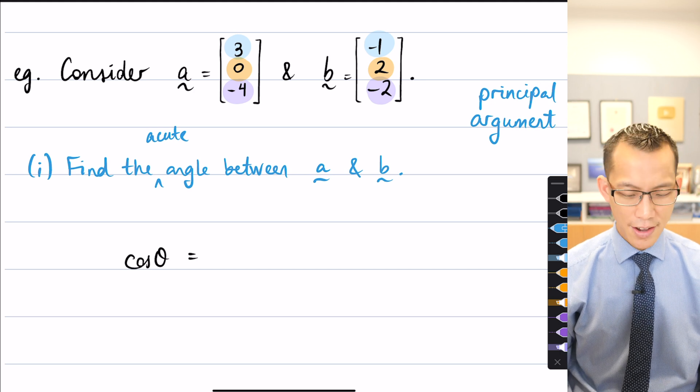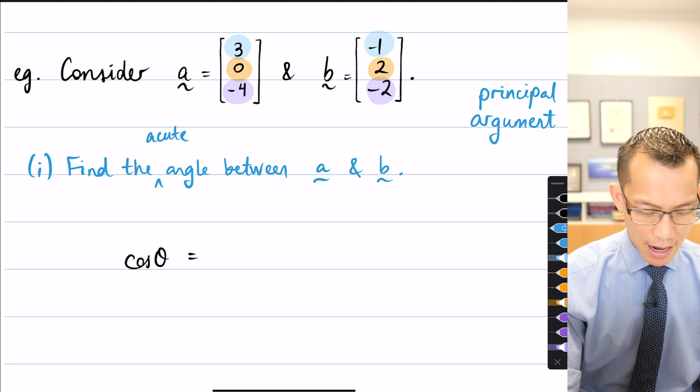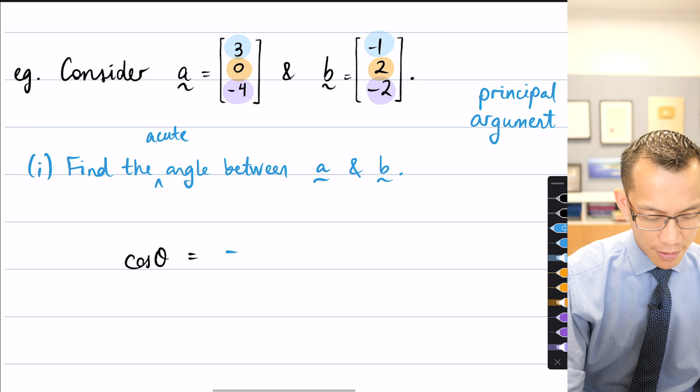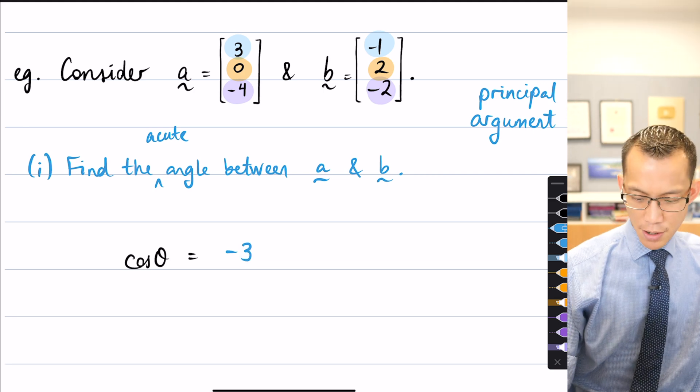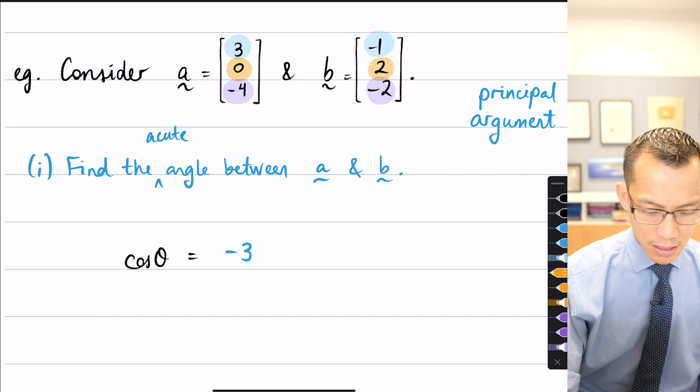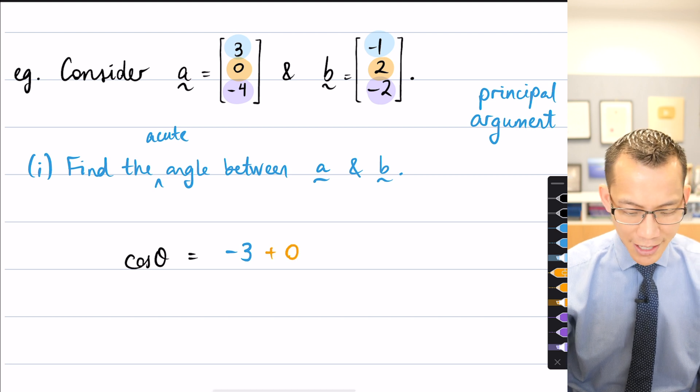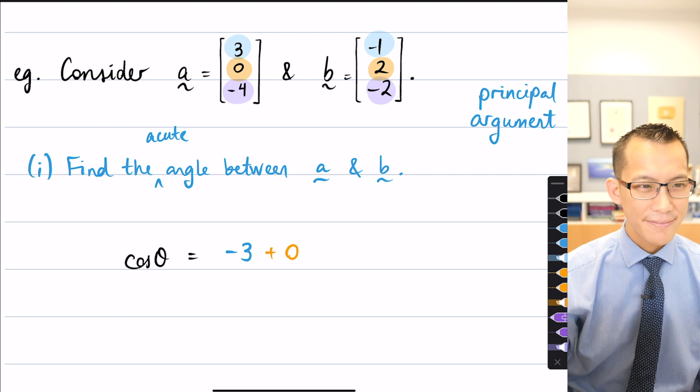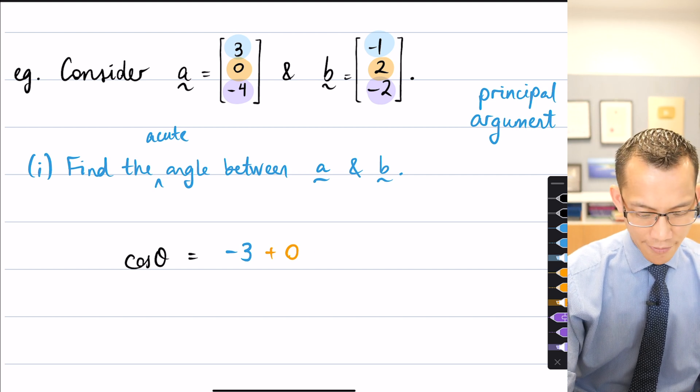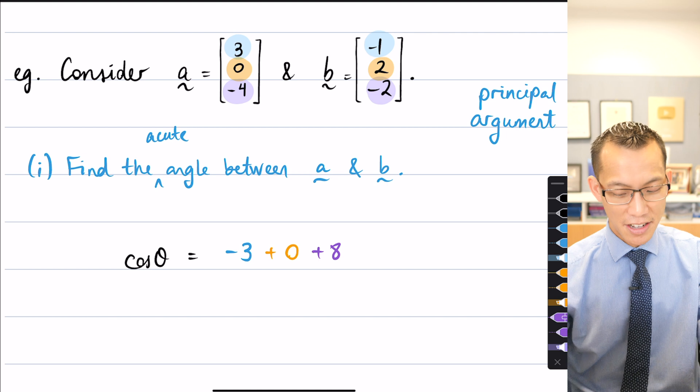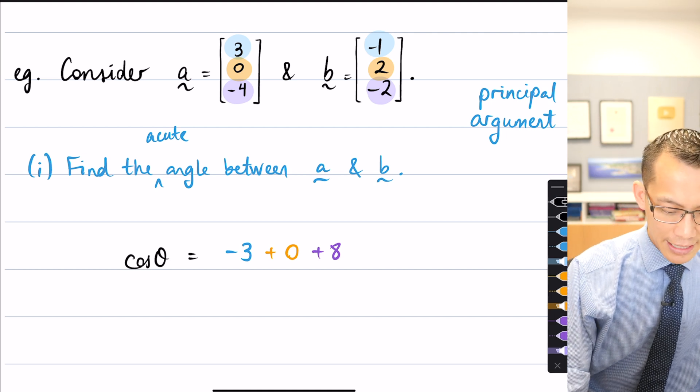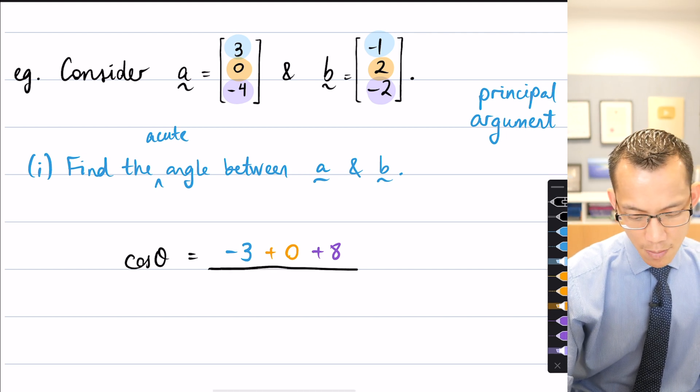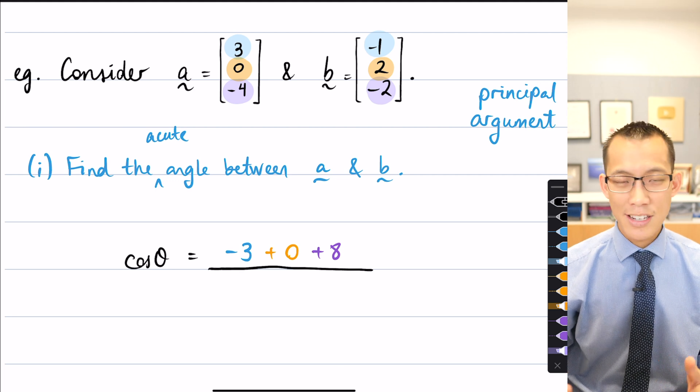Yep, perfect. So I've got my colour code here, so not that you have to do this, but just to make it very obvious, you multiply your x components, that gives you negative 3. In this case, your y components give you a big, fat 0. And then what do my z components give us? 8. That's plus 8. Fantastic. So there's the numerator, dot product, not that hard to calculate.